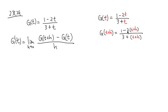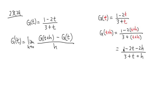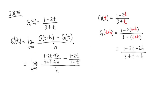We can simplify by distributing the negative 2 into the parentheses and removing the parentheses on the denominator. We get 1 minus 2t minus 2h over 3 plus t plus h. This is g of t plus h. Now we plug this into the limit expression, giving us the full expression for the derivative.